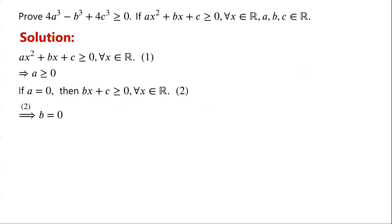We have b plus c is greater than or equal to zero, and 2b plus c is greater than or equal to zero. Subtracting the first inequality from the second, we have b is greater than or equal to zero. Similarly, substituting x equals negative 1 and x equals negative 2 in inequality 2, we have negative b plus c is greater than or equal to zero, and negative 2b plus c is greater than or equal to zero. Subtracting the first from the second gives negative b is greater than or equal to zero, implying b is less than or equal to zero. Since b is both greater than or equal to zero and less than or equal to zero, b equals zero — a contradiction. So b can only be zero.